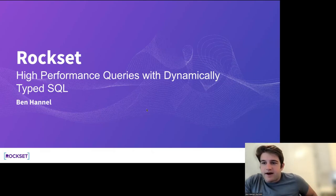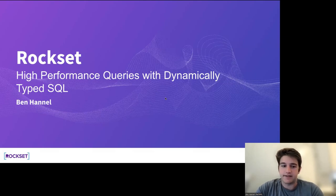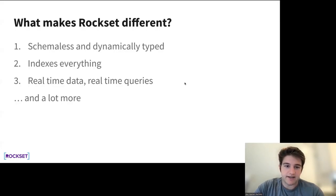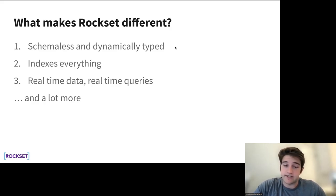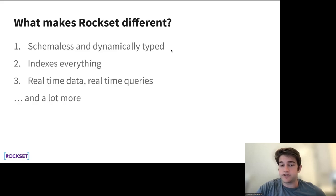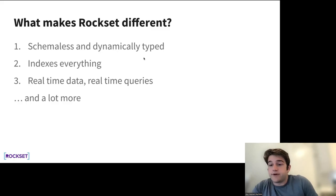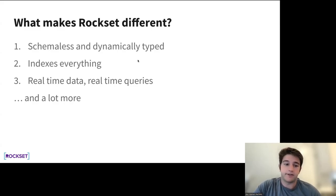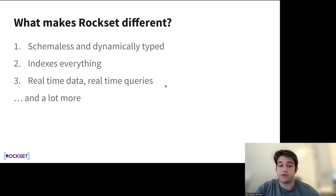I'll be talking about a few aspects of Rockset today. One is how we get high performance despite being dynamically typed and schema-less, and I'll be diving into some interesting aspects of how we index data. Rockset is schema-less and dynamically typed — every document can have a different set of columns, nested data with objects and arrays, and fields of mixed types. Despite supporting full SQL, it looks a lot like a document store. Rockset also indexes everything by default and supports real-time ingest, with writes visible within seconds and query latencies in the tens or hundreds of milliseconds.